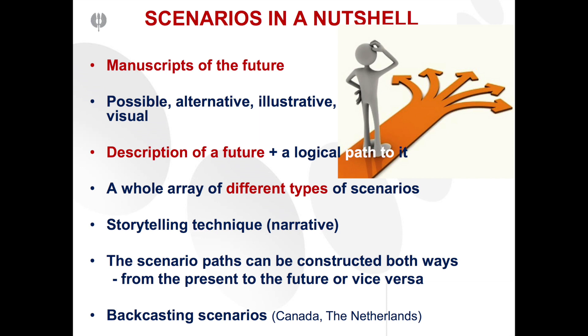Scenario paths can be constructed in two ways: either starting from the present and anticipating various future states and conditions, or vice versa — we jump directly to the future. A time horizon can be 2050, for example, and then we look back from the future to the present and think about what had to happen before we reached that time horizon. These backcasting scenarios have been developed especially in countries like Canada and the Netherlands, and also for the Finnish government when backcasting scenarios on energy and environment were used.